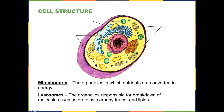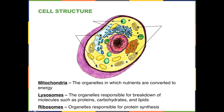The next structures are ribosomes. Notice that some are attached to folding membranes while others are small and just floating around in the cytoplasm. A ribosome is responsible for attaching itself to the RNA template and producing proteins. There are two kinds of ribosomes: free ribosomes floating in the cytoplasm, and ribosomes associated with the folding membrane structure we'll talk about next.